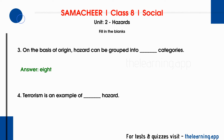Fourth question: terrorism is an example of a dash hazard. The correct answer is human induced hazard. We have many natural hazards like tsunami, earthquake, and landslide, but terrorism is a human induced hazard - it is a threat caused by humans.